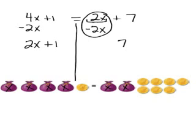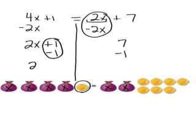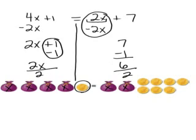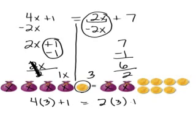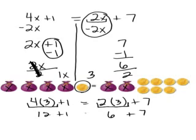Remember, the next thing I did in the picture was I got rid of this one coin. So I need to do the same thing here — getting rid of means subtraction. Plus one minus one is zero. Two X equals six. Then, dividing the coins by the number of bags means I'm going to divide both sides by two. Two over two gives me one, so I have one X, and six divided by two is three. Then I can check: four times three plus one — does that equal two times three plus seven? Four times three is twelve plus one, two times three is six plus seven. Twelve plus one is thirteen, and six plus seven is thirteen. My answer is right.